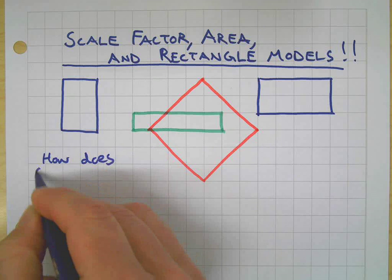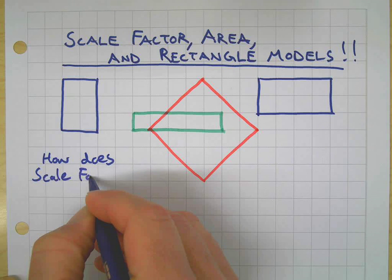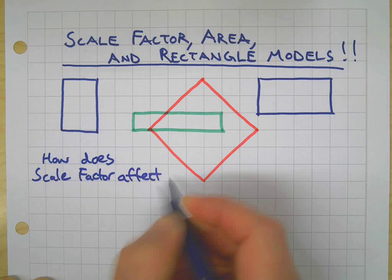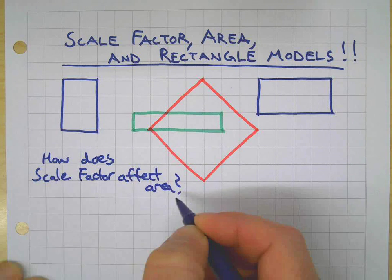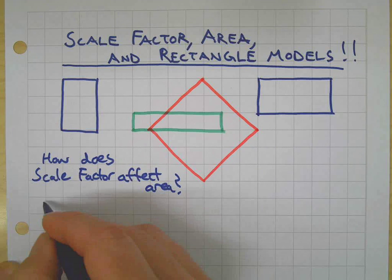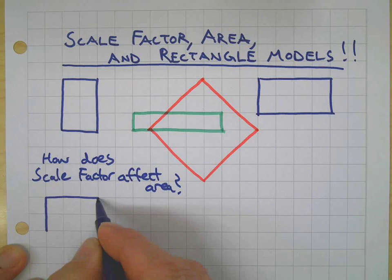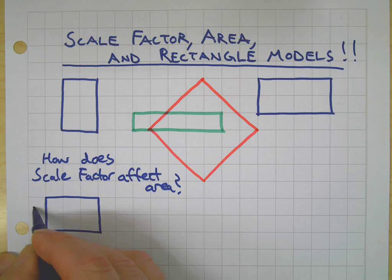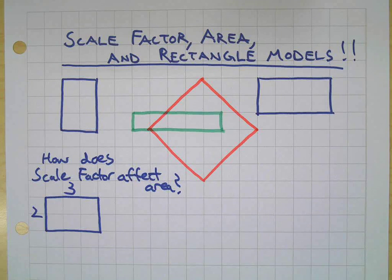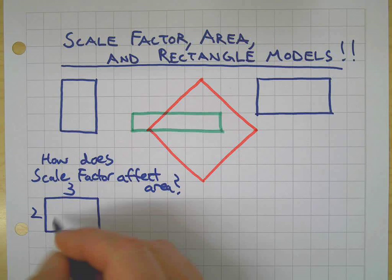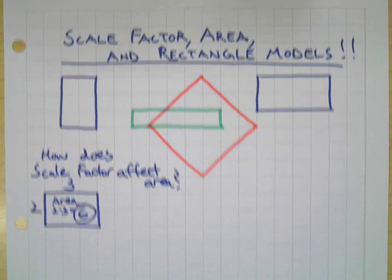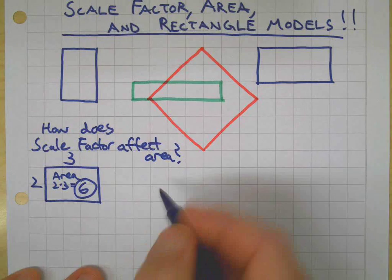Let's use a little example and define what scale factor is first of all. Say I've got a rectangle — and by the way, this works for all shapes, not just rectangles, but we're keeping it simple. There's a rectangle two by three, and the area is two times three, which is six. I think we could all agree on that.